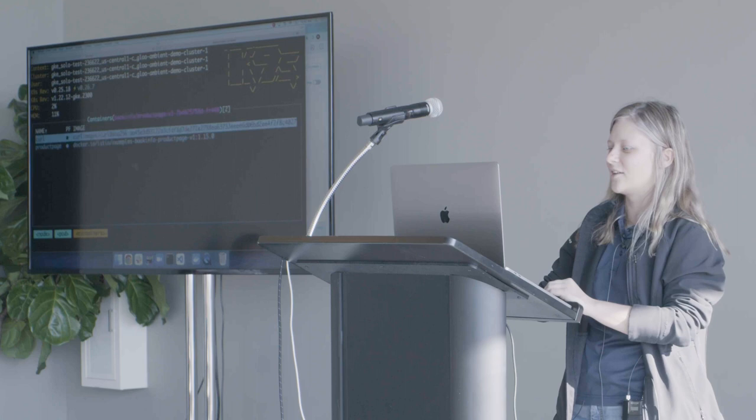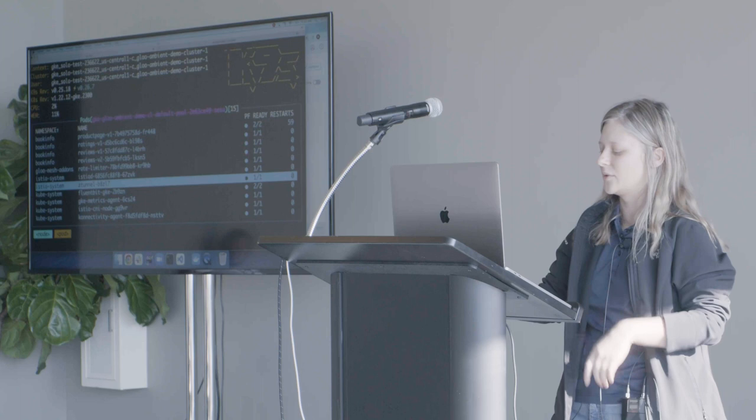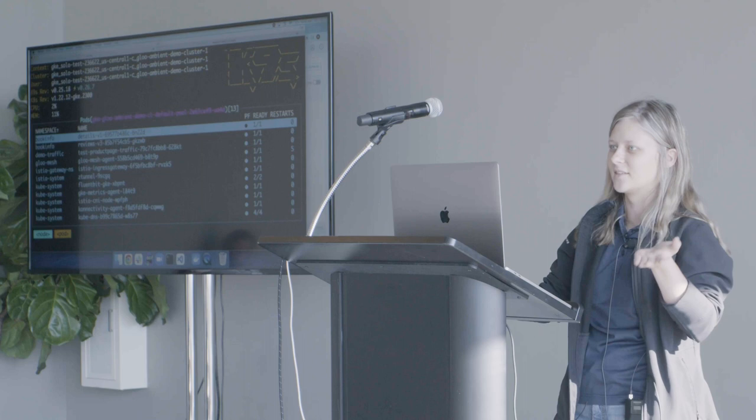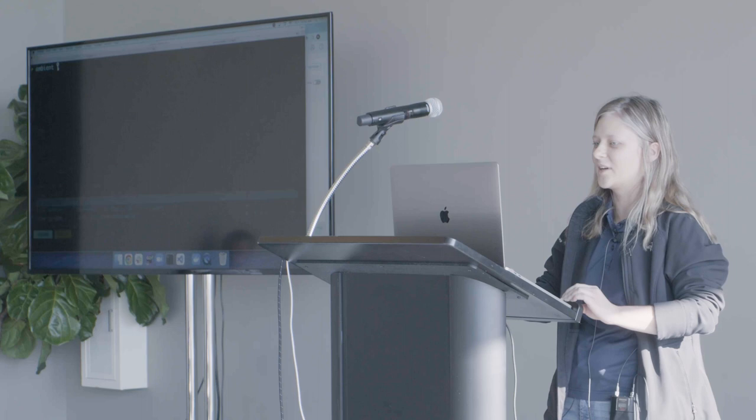So on the second node, we have actually our book info or like a subset of our book info here. So we have product page, ratings, reviews V1 and V2. And then again, also Z tunnel and Istio CNI. One thing you might notice here is there aren't any sidecars. In product page, I actually have a curl container just to test some traffic that we're going to be sending. But all of these are just the container itself and all the traffic is going to go through the Z tunnel or the waypoint proxy when we create one. And the final node has the last part of our book info app. So it has reviews V3 and the details.